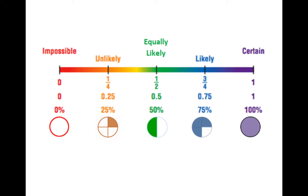This is a reminder of our probability line: on the left is zero — impossible. Moving right: unlikely at 25 percent, then 50 percent in the middle, then 75 percent — likely, and finally one or 100 percent — certain. We copied this in our notebooks last lesson.